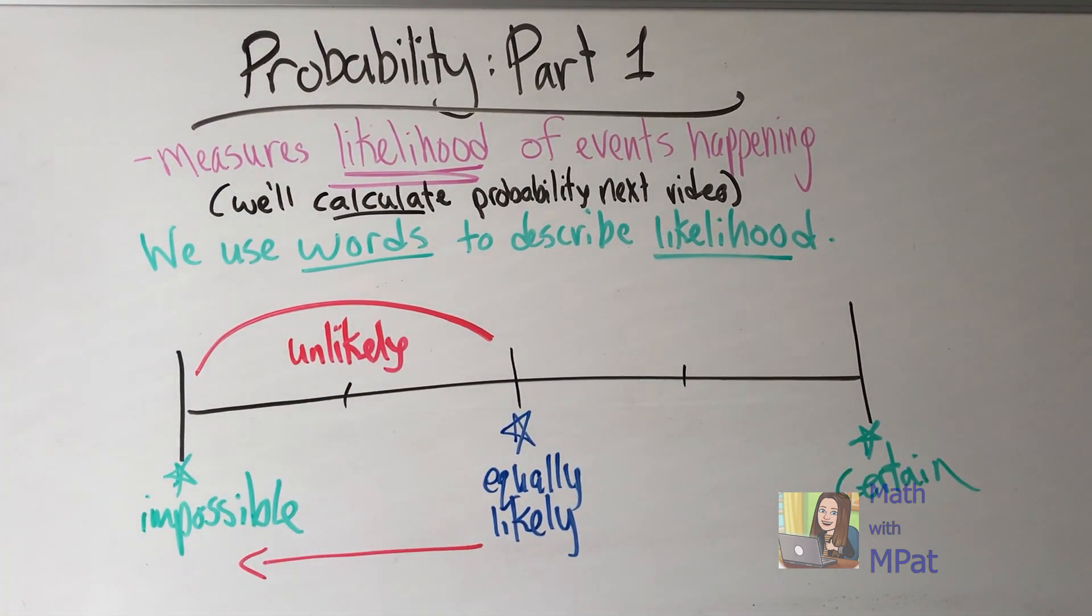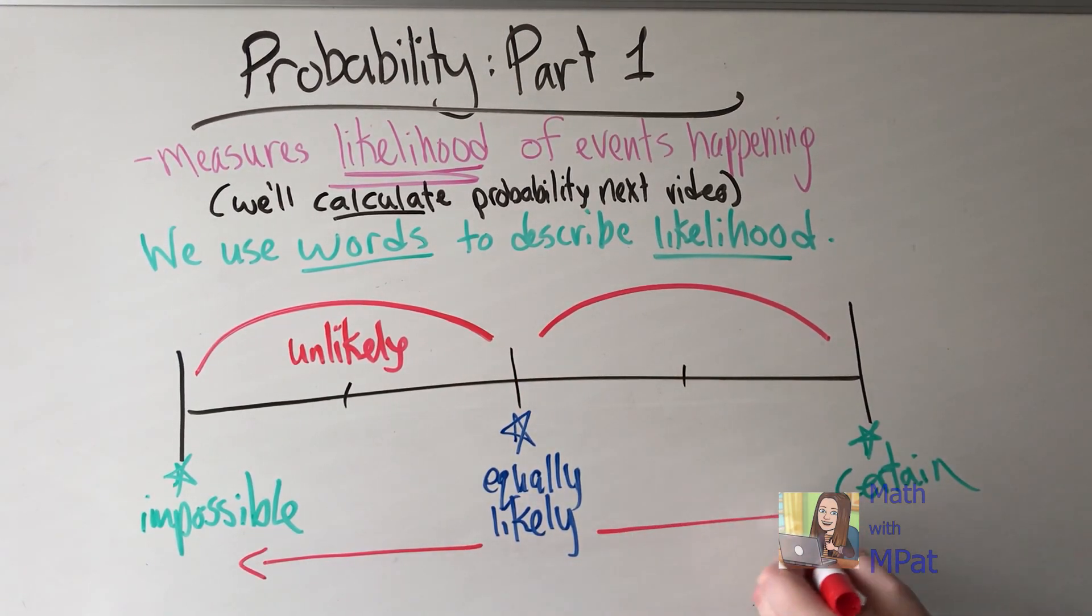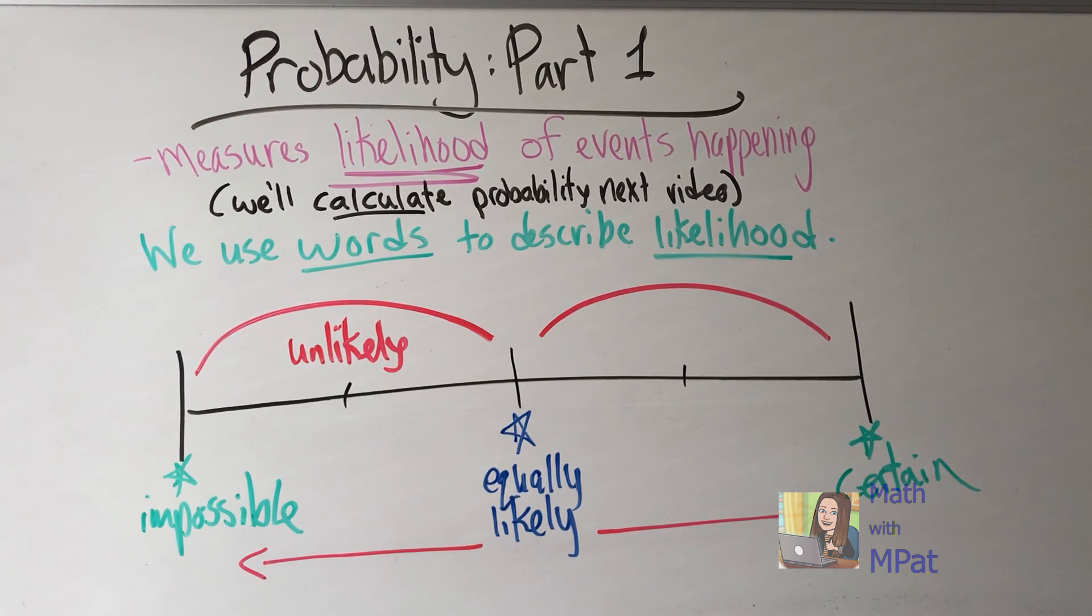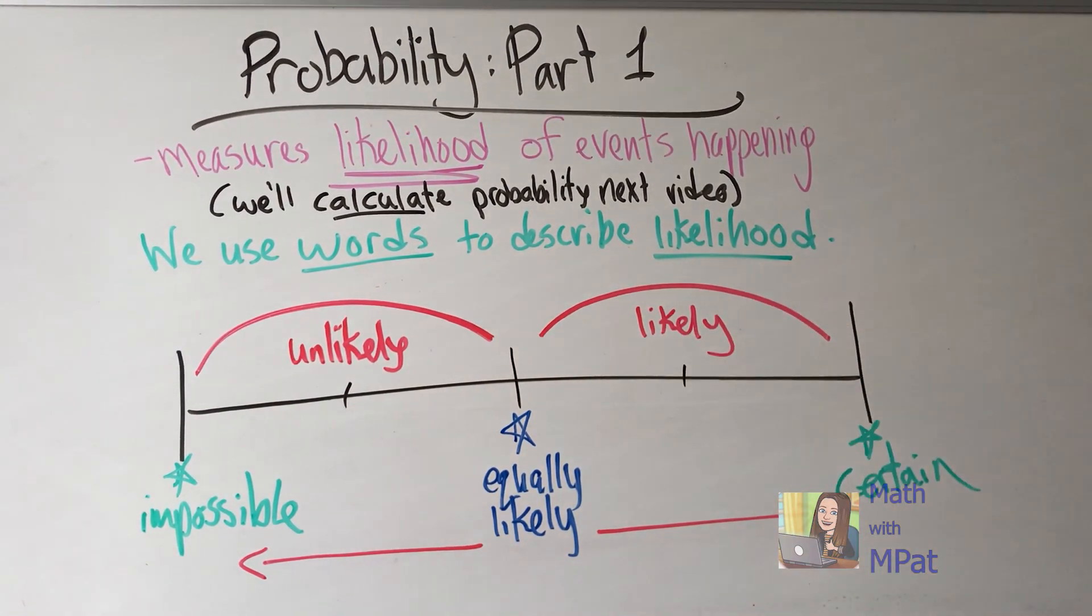And just the same with this side over here. As I move from equally likely towards certain events, they start to become more and more likely to happen. So we call this side likely.